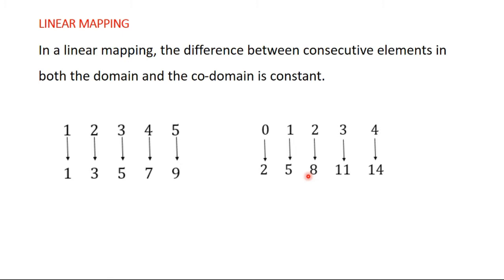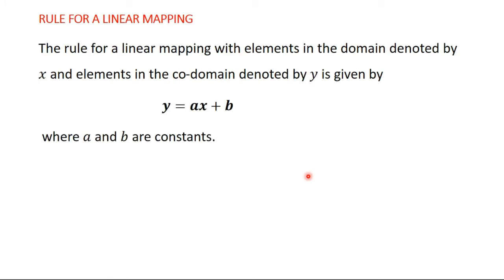So once you are satisfied that it's a linear mapping, how do you find the rule or the formula that describes the mapping? The rule or the formula that can join members of the two sets — members of the codomain to members of the domain. The rule of a linear mapping with elements in the domain denoted by x and elements in the codomain denoted by y is given by y = ax + b, where a and b are constants.